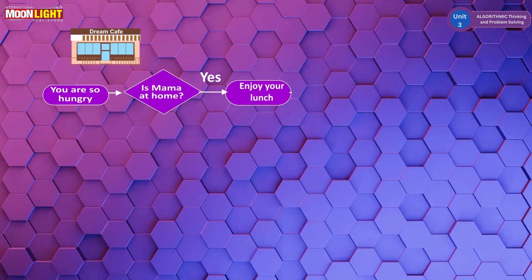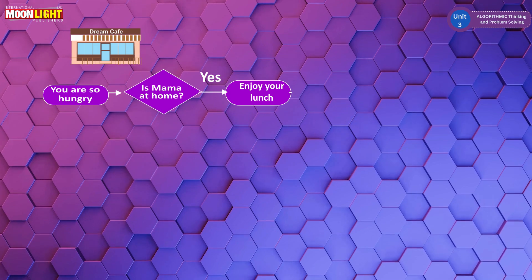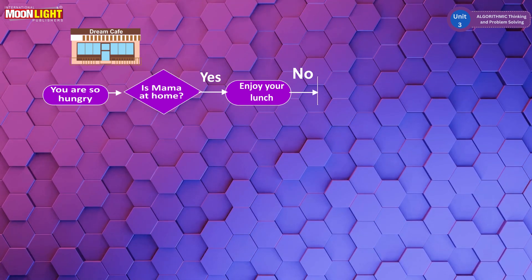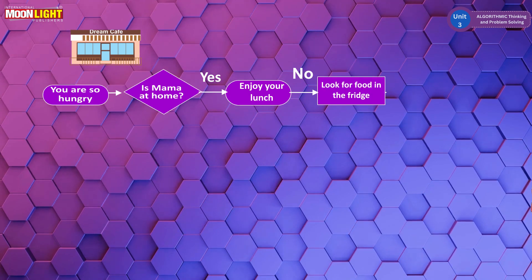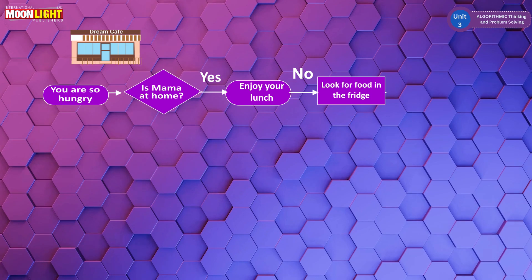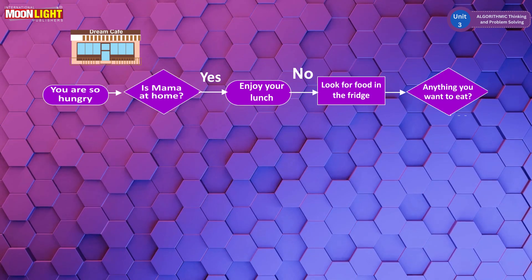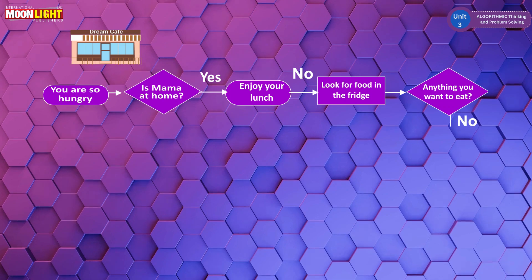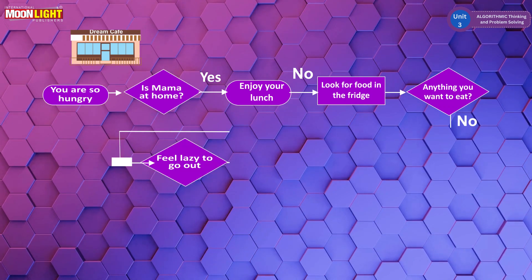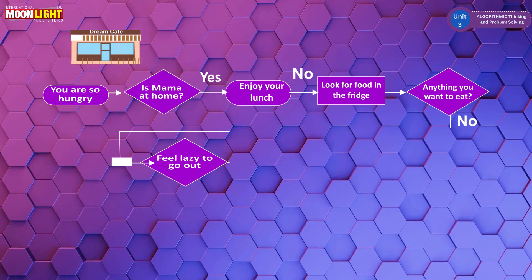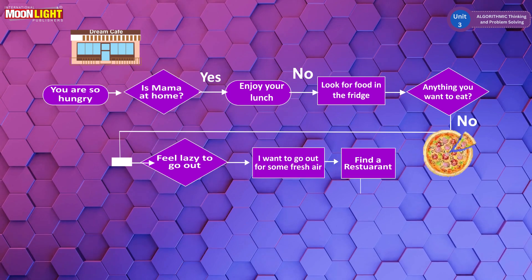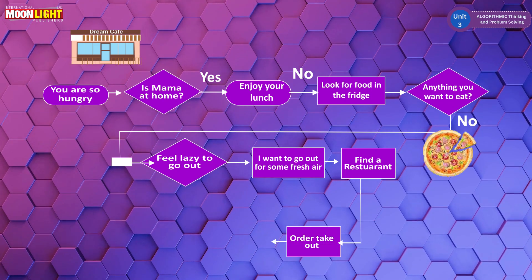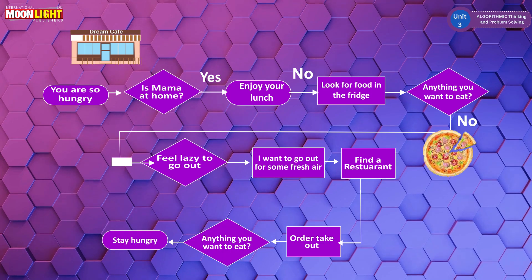If mama is at home, you have lunch at home and enjoy your lunch. In case the answer is no — your mother is not at home — then you go to the next decision: open the fridge and check if there is edible food. If there is no food, we go to another decision-making sign. You will decide: go outside, order food, enjoy your lunch, and then go home again.